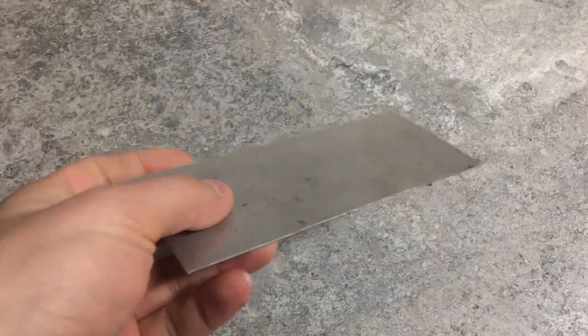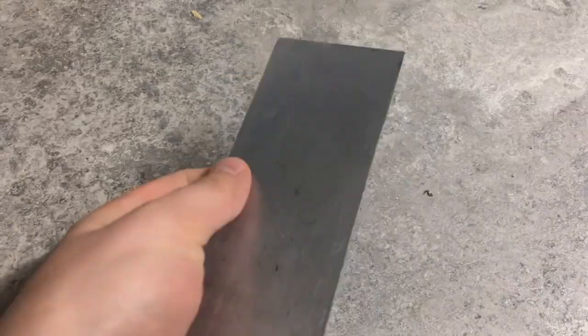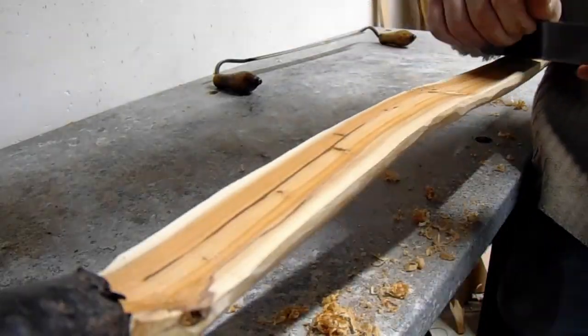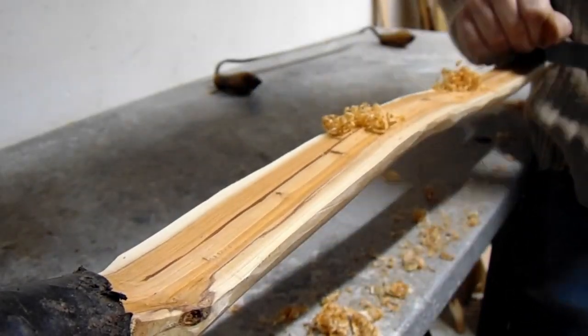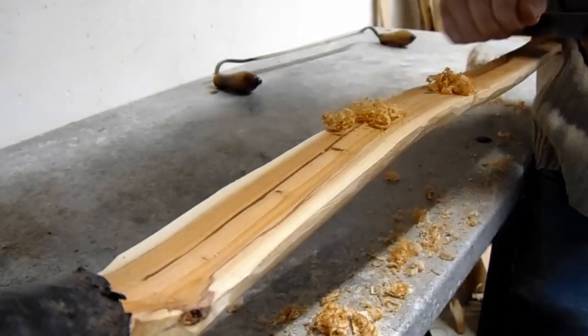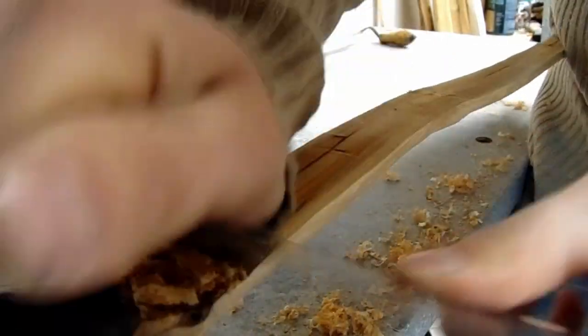Great tool when it comes to the tillering is a card scraper. The bowyer using it has full control on wood removal and can make it very precisely. Getting this tool was a game changer on my bow making path, so I can truly recommend it.